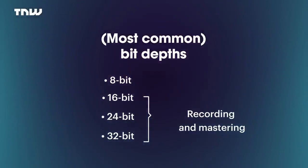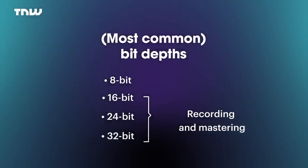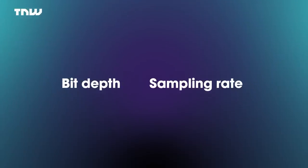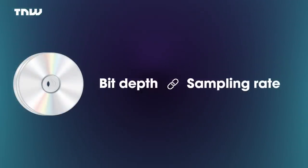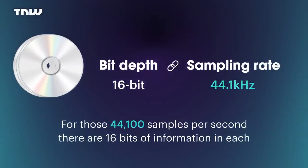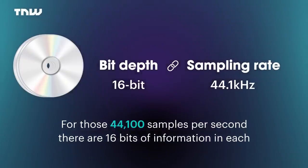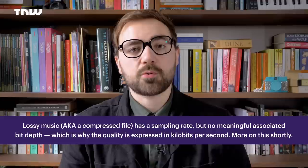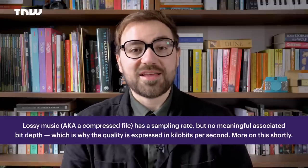Realistically, higher bit depth files are far more useful for recording and mastering than for a listener. Bit depth and sampling rate are deeply connected. Taking the standard CD format of 44,100 Hz sampling rate and 16-bit bit depth: for those 44,100 samples taken every second, there are 16 bits of information in each one. When a file has a bit depth and sample rate, that is referred to as lossless — literally no quality is lost — and formats like CD or FLAC are examples of this.